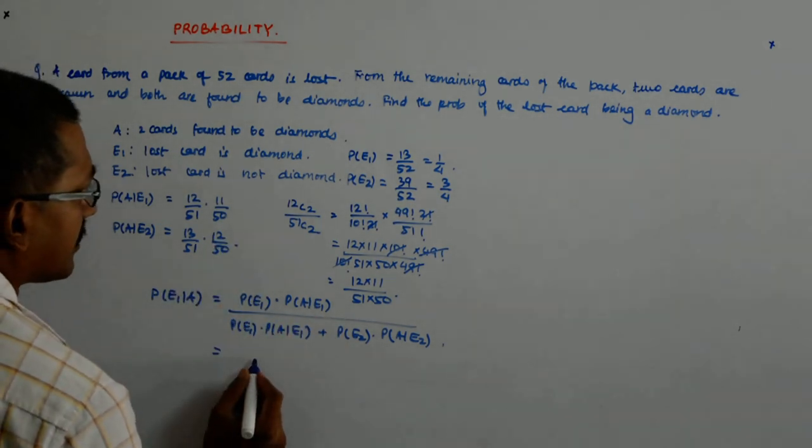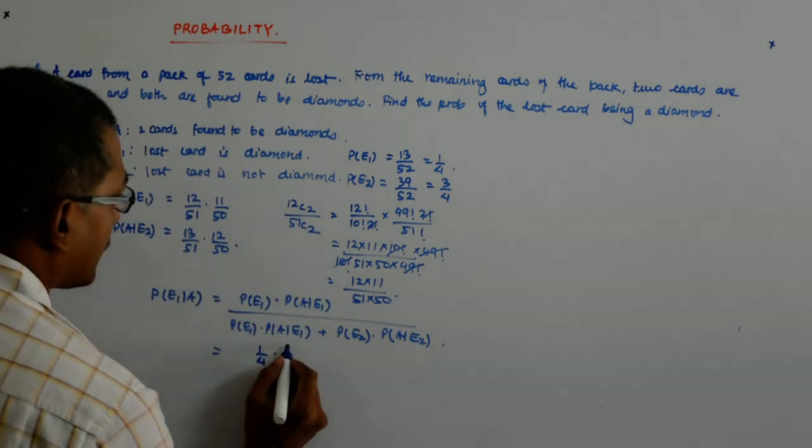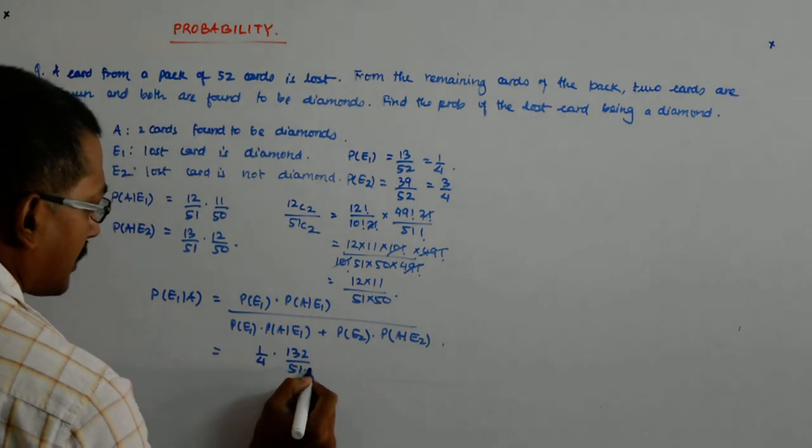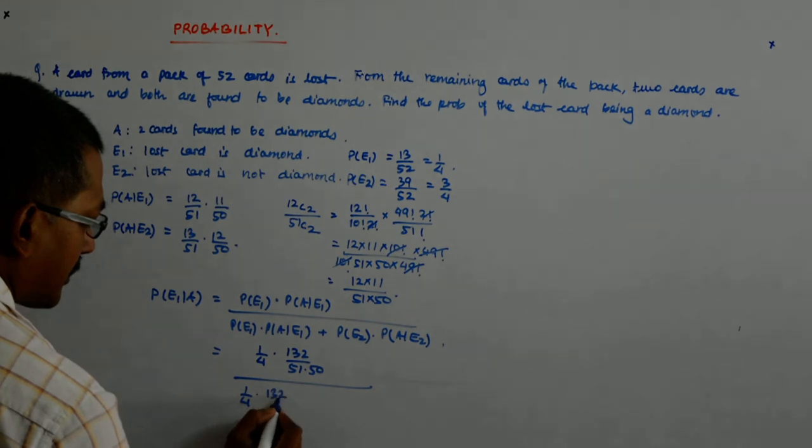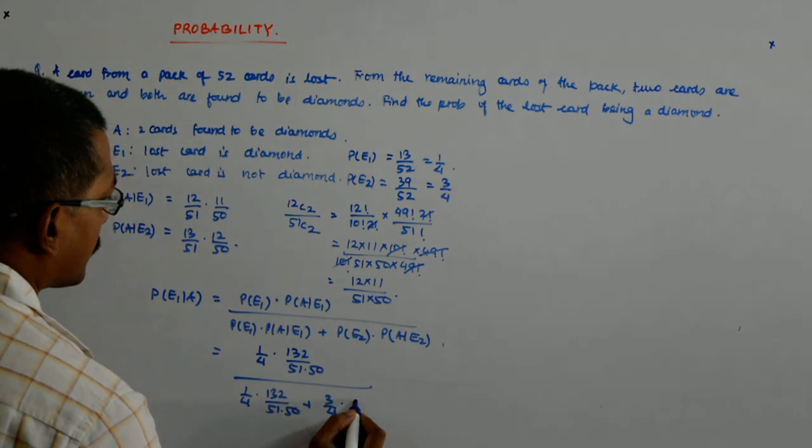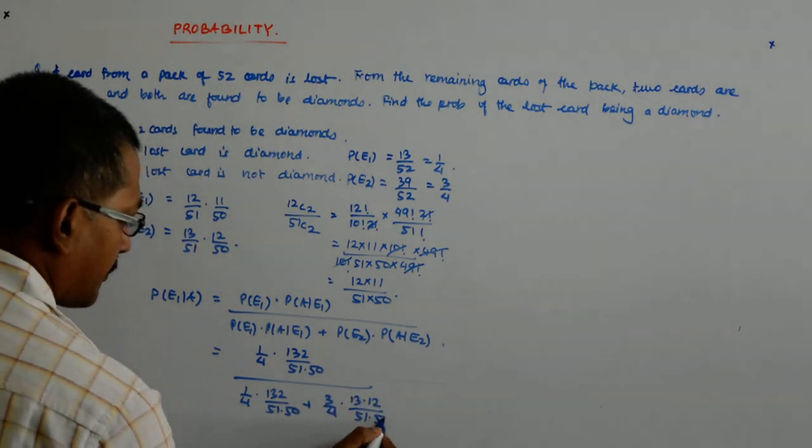P(E1) is 1 by 4. P(A|E1) is 132 upon 51 into 50 divided by 1 by 4 into 132 upon 51 into 50 plus 3 by 4 into 13 into 12 upon 51 into 50.